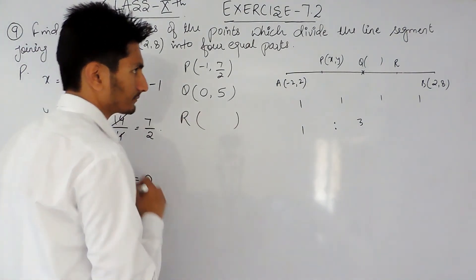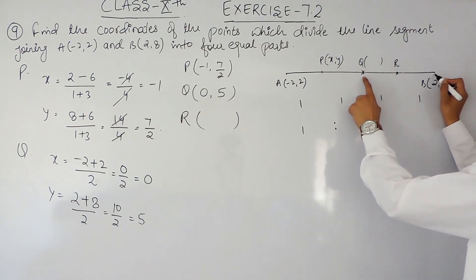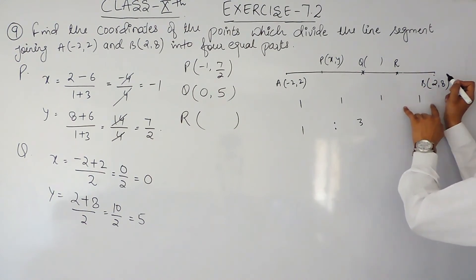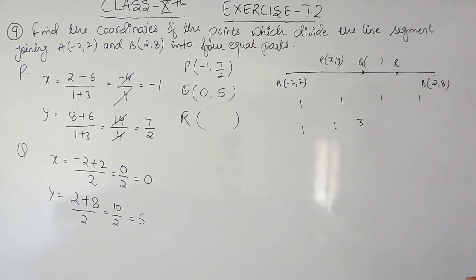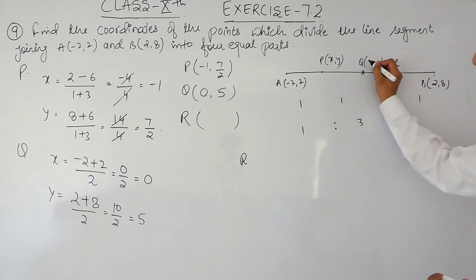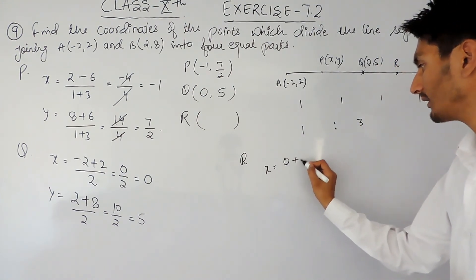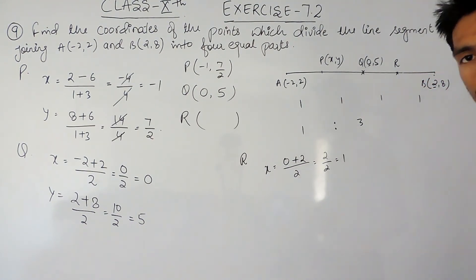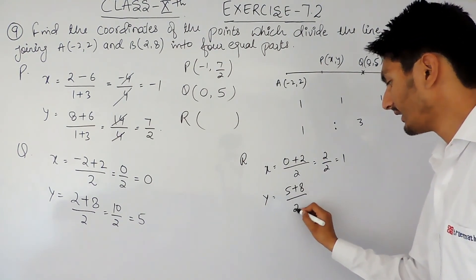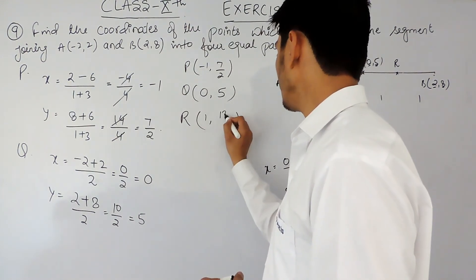Now I have to find the coordinate for R. Looking at this figure closely, point R acts as the midpoint for Q and B, because the distance between Q and R is 1 unit and the distance between R and B is also 1 unit. So I can use the midpoint formula again. The coordinates of Q are (0, 5). Adding the x values and dividing by 2 gives 1, and adding the y values and dividing by 2 gives 13/2. So the coordinates of R are (1, 13/2).